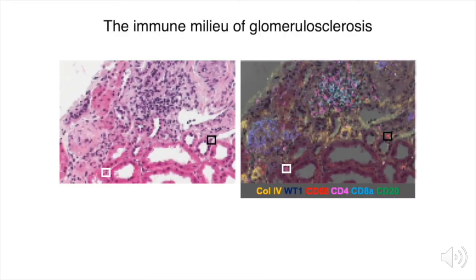Even in healthy kidneys, there can be a degree of glomerulosclerosis, and in this paper, we sought to characterize the immune interactions with sclerotic glomeruli. We found a T-cell predominant response, and by overlaying IMC images onto adjacent H&E sections, we can even ascribe identities to individual cells, such as the CD4-positive T-cell in the white box and the CD68-positive macrophage in the black box.